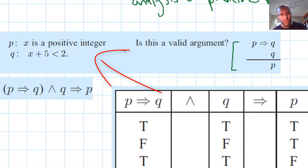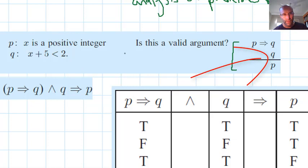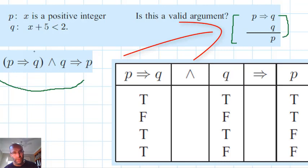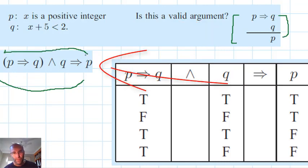If x is a positive integer, then x plus 5 is less than 2. So if we have x plus 5 is less than 2, do we have x as a positive integer? Is that true? Written in logical form, if P implies Q and we have Q, does that imply P? What you see here are the same statement in different forms.